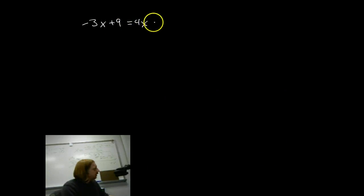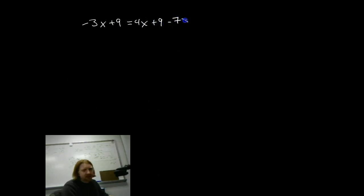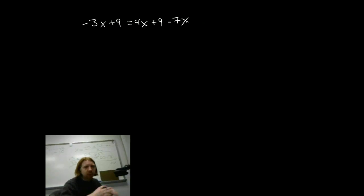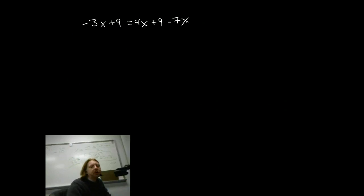So, negative 3x plus 9 equals 4x plus 9 minus 7x. Now, once in a while, strange things happen when you do algebra. Let's not worry about the strange thing yet. Let's just get right in and try to get the x's on one side, the numbers on the other, and see what we get.